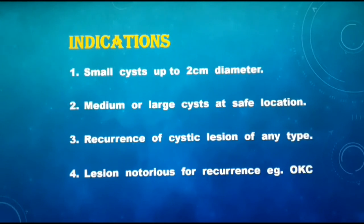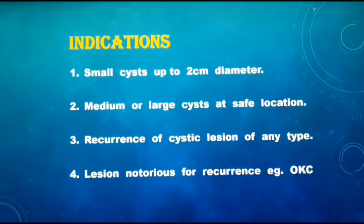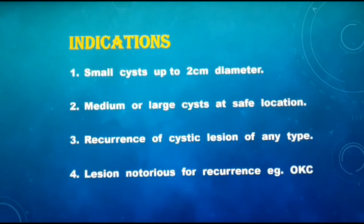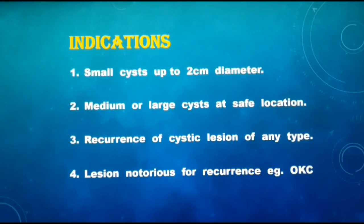Indications of enucleation include any small cysts measuring up to 2 cm in diameter, medium or large cysts at a safe location where there are no vital structures in close vicinity, and any recurrent lesions or lesions notorious for recurrence — for example, odontogenic keratocyst.